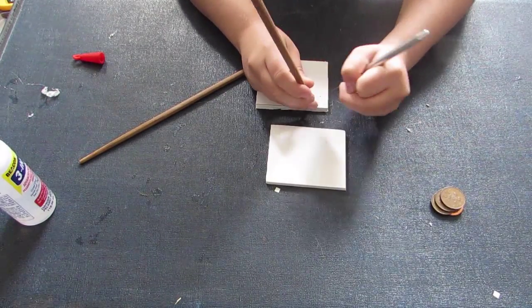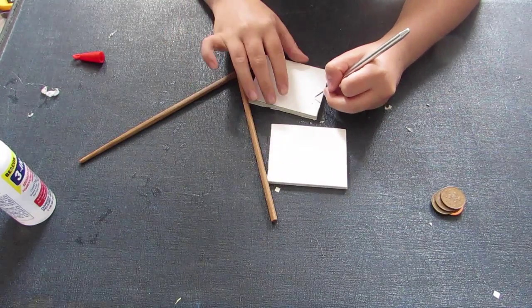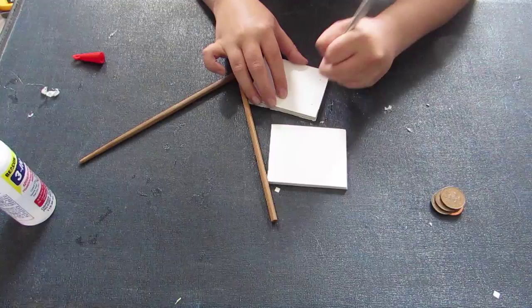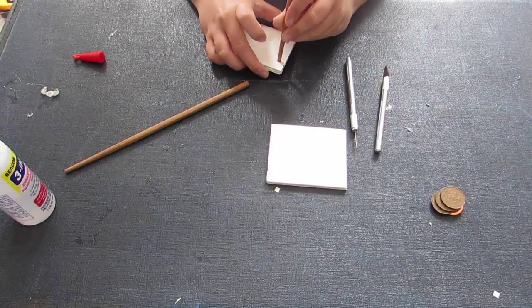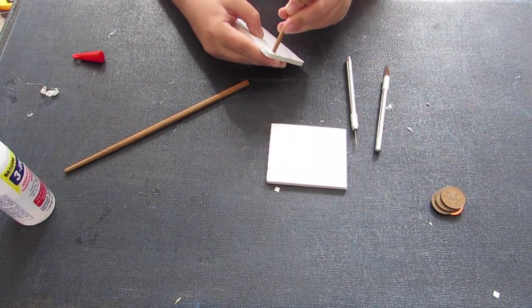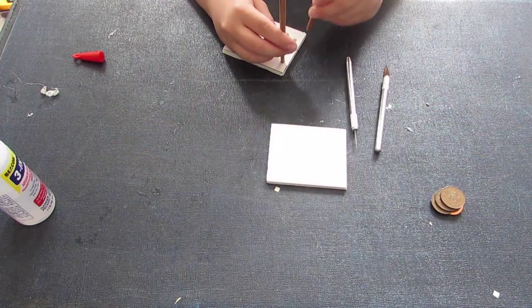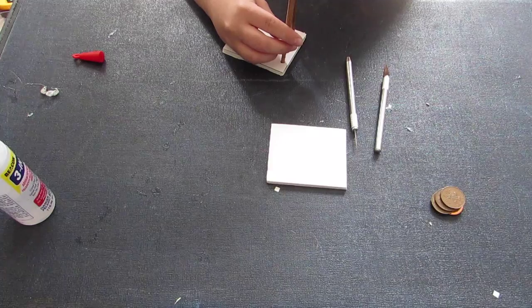You want your chopsticks to be maybe a centimeter in either side, I just kind of eyeballed it and guessed where I wanted them to be. And you just want to use an exacto knife to cut just a little hole in it so your chopsticks can fit in. The hole doesn't need to be really deep and have the chopsticks going through to the other side, it just needs to be deep enough so they can rest in it.